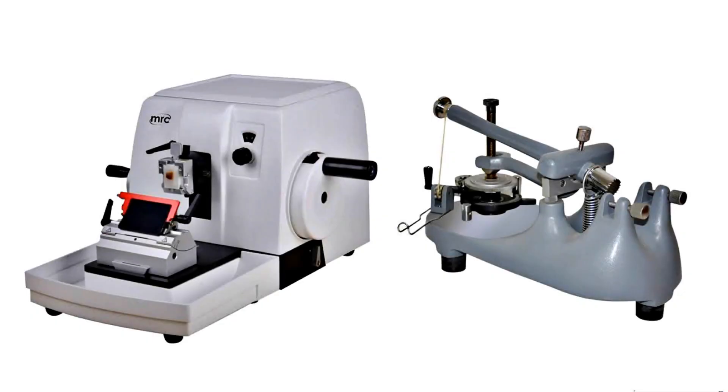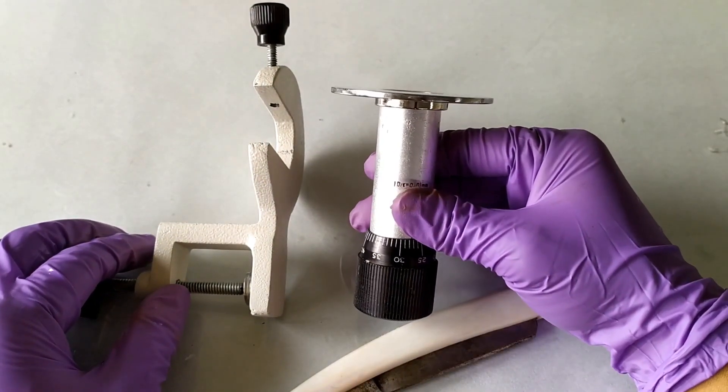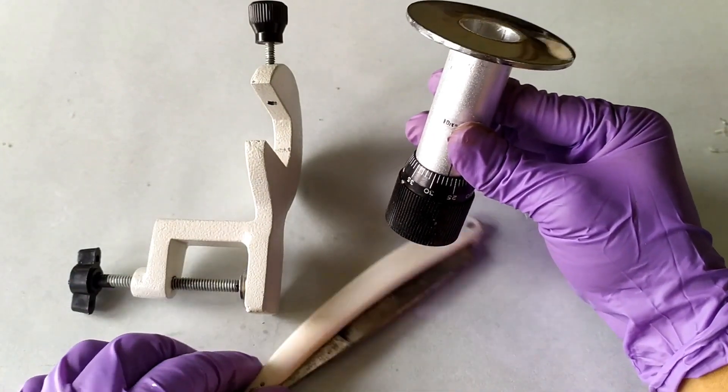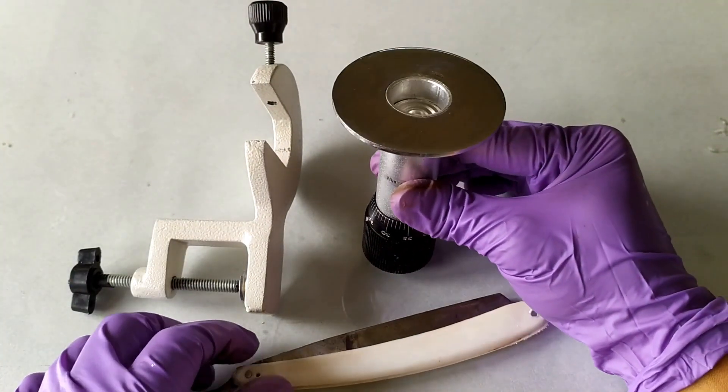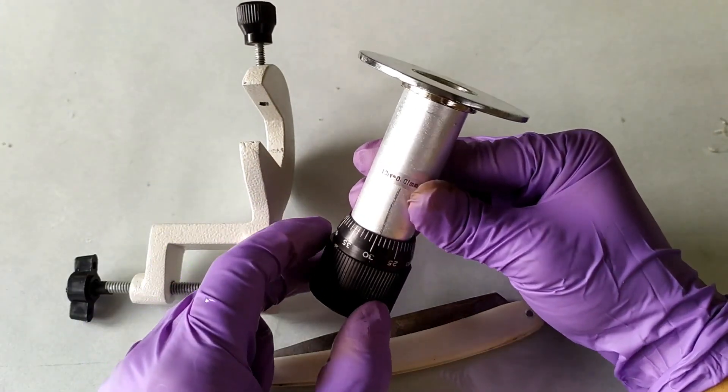Compared to the traditional bench top microtome that requires the specimen to be chemically processed and then embedded in a wax block for sectioning, the hand microtome can produce thin enough sections quickly and without the need for any sample pre-treatment. In fact, the hand microtome works best with fresh plant materials, which may or may not be embedded in a pith material.